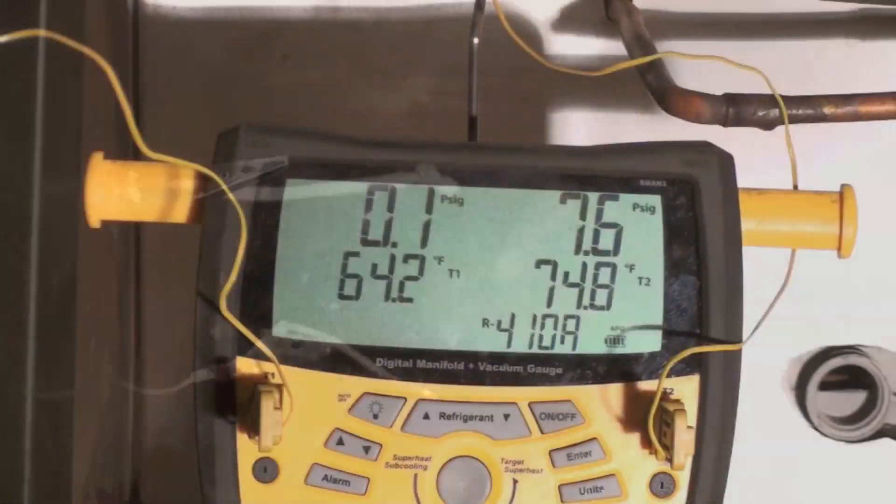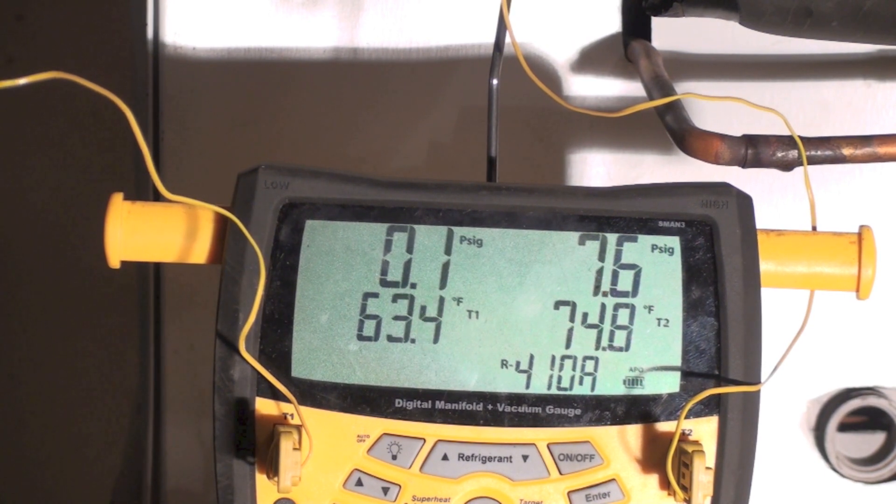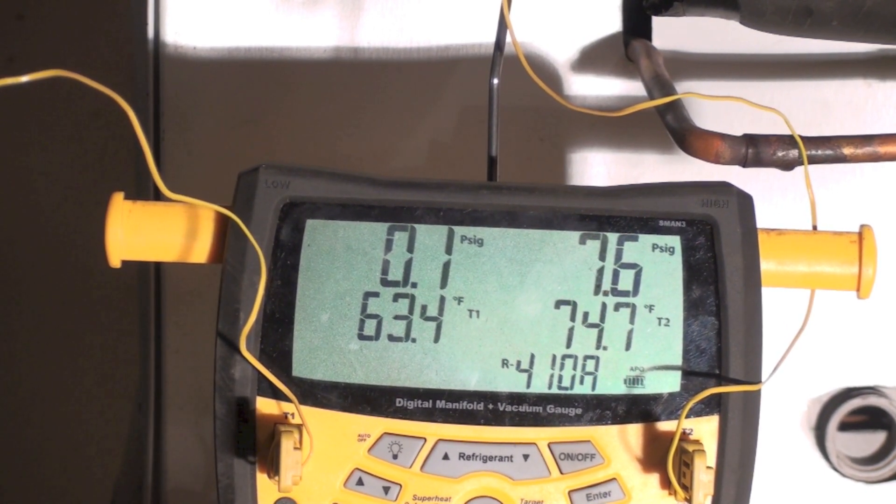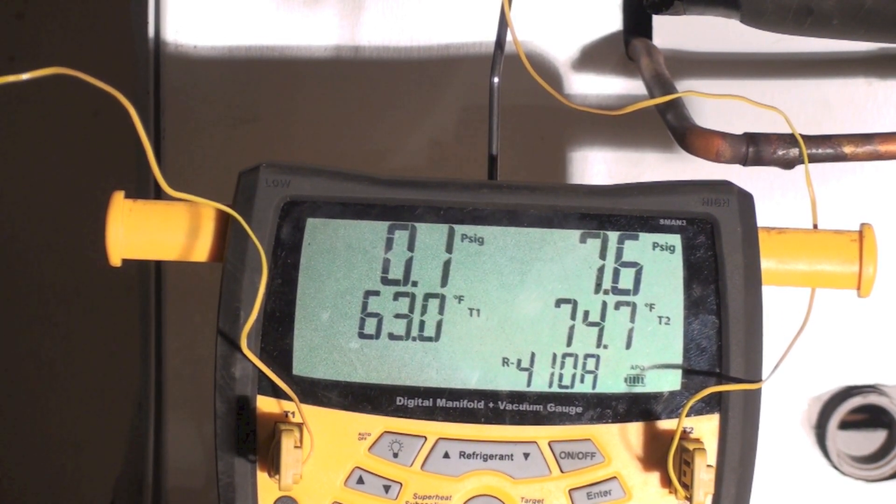Put the sock back over it, starts dropping down again. Probably gonna end up back down around that 61. Okay, why does it do that?